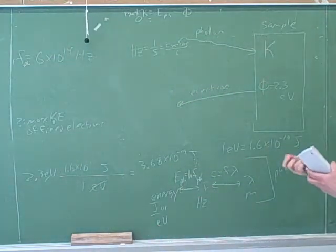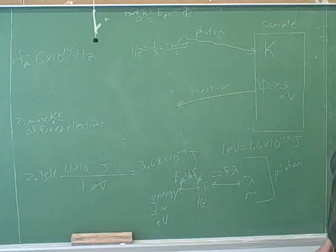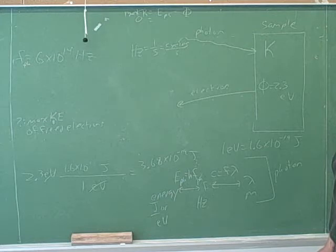So you can use the same equation. The energy of the photon equals Planck constant times frequency to solve for the energy. Right. So the energy minus the work function would give you the maximum. Okay, good.